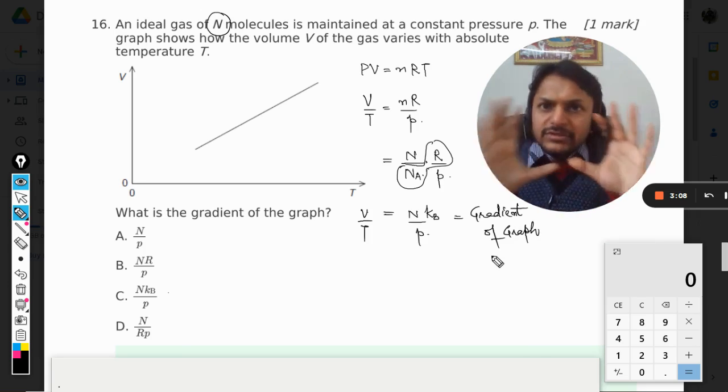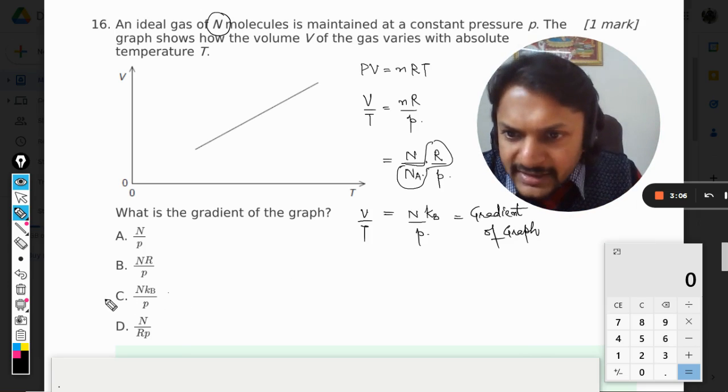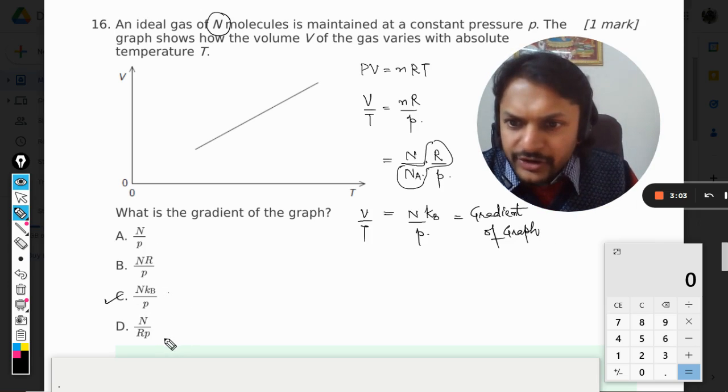I think things will be clear now. The answer will be C. It's not A, B, or D. The answer is C: Nkb by P.